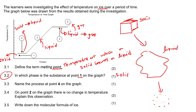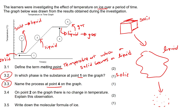Now it says: name the process at point four. At point four, we are going from a liquid to a gas. Think about if you put water in your kettle at home and you start boiling it — it turns into a gas, that's why you see the steam coming out the top of the kettle. That is called boiling.